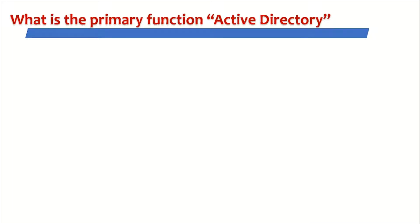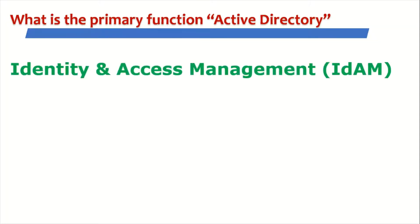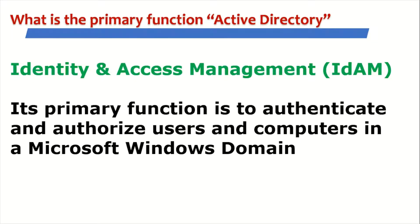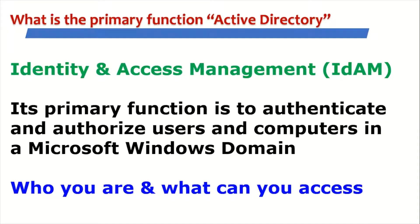What is the primary function of Active Directory? The primary function of Active Directory is identity and access management. Some people call it IDAM, some people call it IAM. Its primary function is to authenticate and authorize users and computers in a Microsoft Windows domain. In a nutshell, we can say that the primary function is: who you are, and what can you access. This is the basic function of Active Directory.